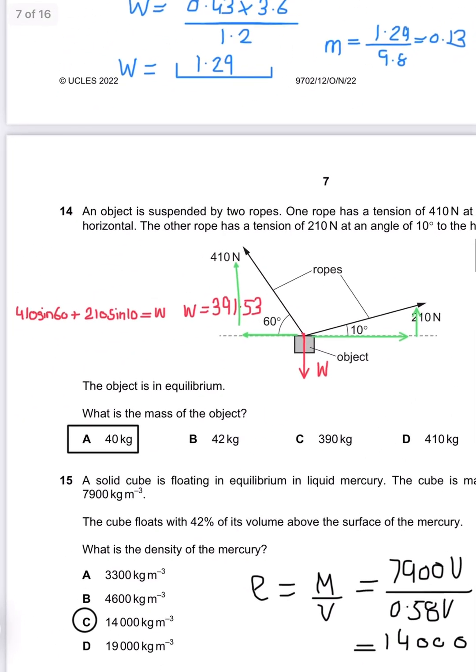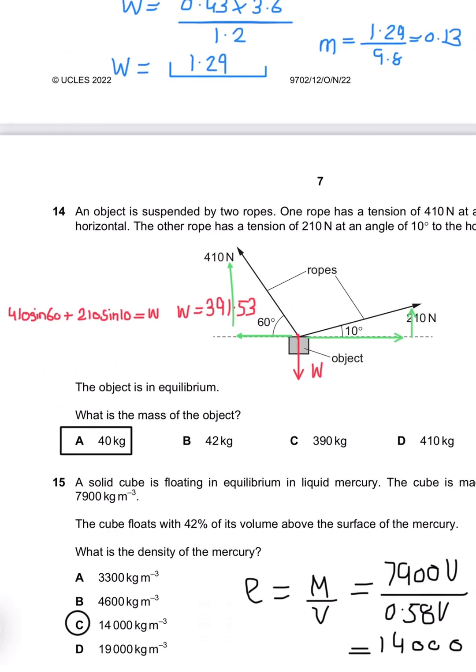Question 14: A force diagram is given. What is the mass of the object? We need to do upward forces equals downward forces, so 410 sin 60 plus 210 sin 10 equals w. So w would be 391.53, and the mass would be divided by 9.81. So 40 kg is the appropriate answer.